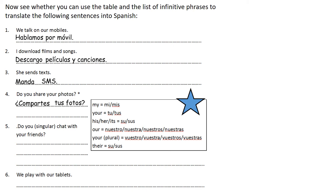Number three: do you (singular) chat with your friends? This is tú. We know chatear con mis amigos is to chat with my friends. So do you chat becomes chateas — we've taken off that AR and put on AS. And con mis amigos was with my friends, so mis needs to become tus because there's more than one: mi amigo, my friend; mis amigos, my friends; tu amigo, your friend; tus amigos, your friends. So we need con tus amigos, and don't forget the upside-down question mark at the beginning.